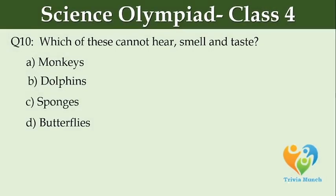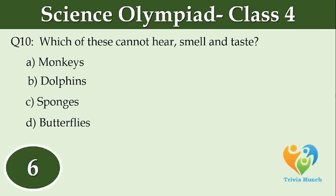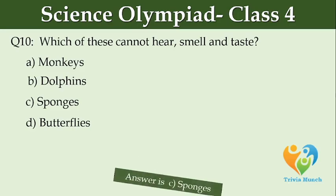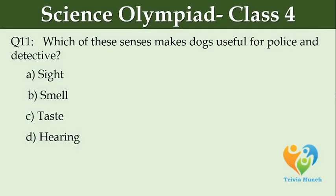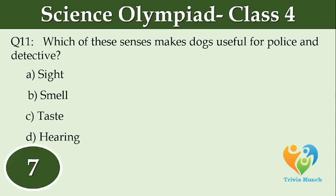Which of these cannot hear, smell, and taste? Option A: monkeys. Option B: dolphins. Option C: sponges. Option D: butterflies. Which of these senses makes dogs useful for police and detectives? Option A: sight. Option B: smell. Option C: taste. Option D: hearing.